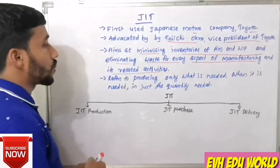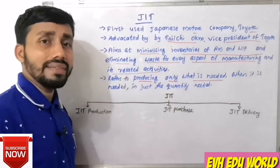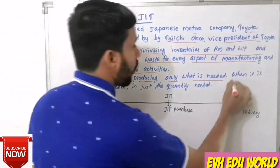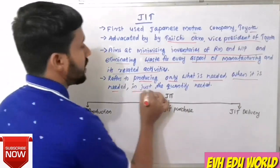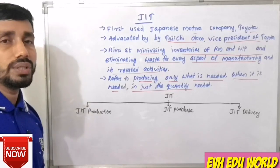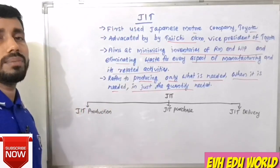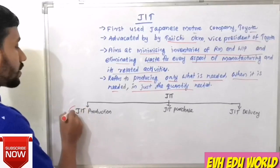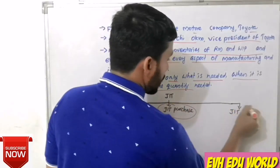Just-In-Time refers to producing only what is needed, when it is needed. JIT includes three categories: JIT Production, JIT Purchasing, and JIT Delivery.